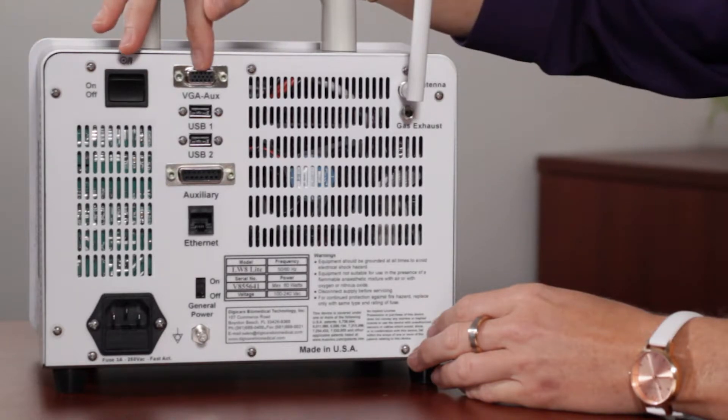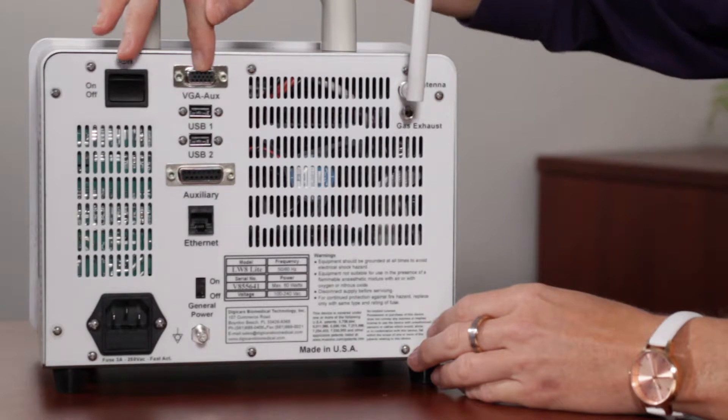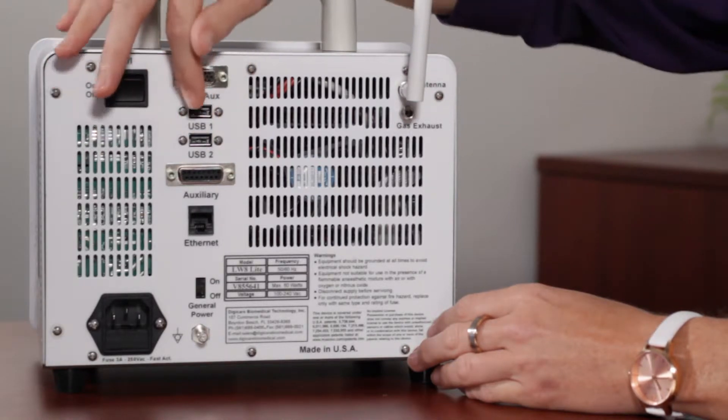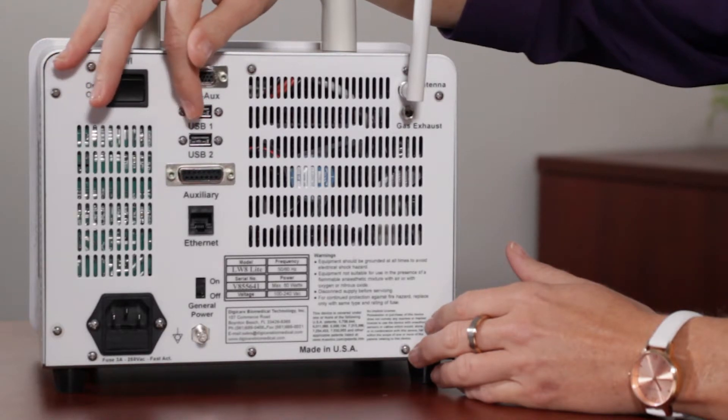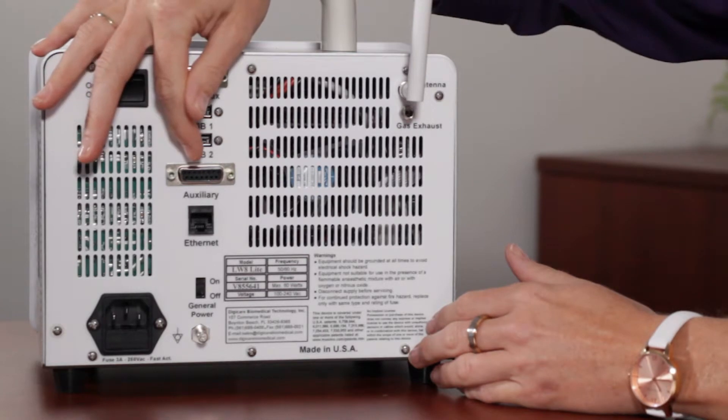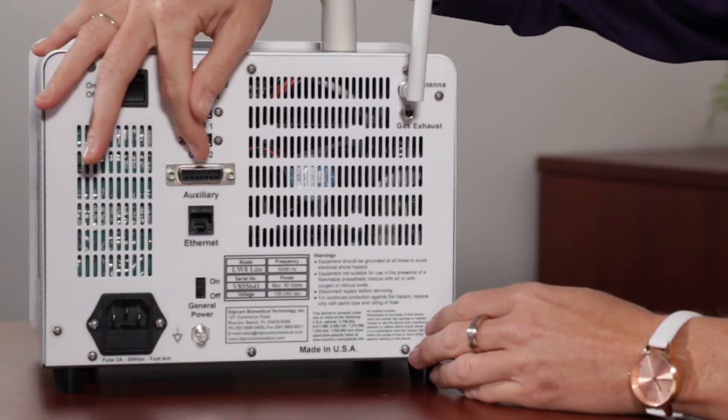The VGA is so you can connect a bigger screen to the monitor. There's two USB ports. You can put a USB thumb drive in them to save data. You can attach a keyboard, mouse, or printer. The auxiliary is for analog output signals.